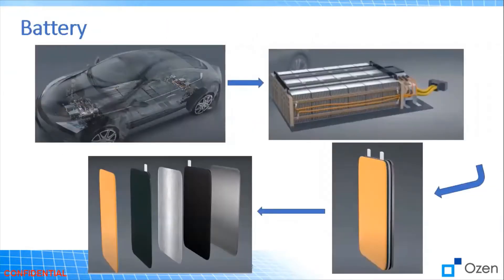Before we start about the failure modes, let's talk about the battery. If we take the car, for example, the battery in an electric vehicle consists of hundreds of battery cells. What's called the battery pack consists of multiple cells, and each cell consists of multiple components.